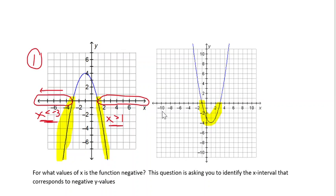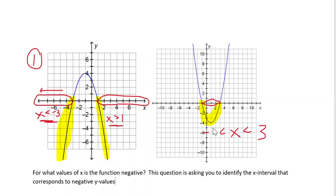For this function, it's not the two ends — it's in the middle — so it's in between two x values that we would see negative y values in the table. We would identify the x-intercepts as negative 1 and 3, so between the x values of negative 1 and 3 we would have negative y values.